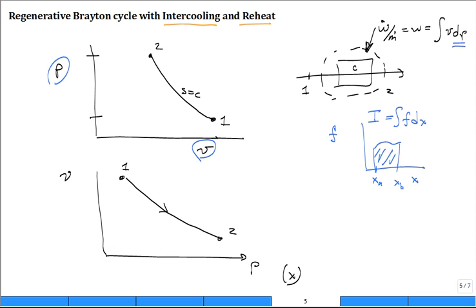And what we're interested in is the area under the curve, and that's a visual representation of the work. Lowercase w, the work per unit mass, the area under the curve.